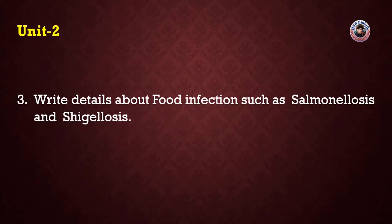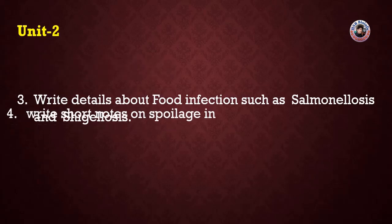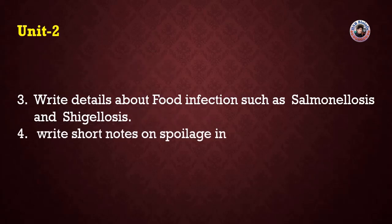Coming to Unit 2 — First important question: Write details about food infection such as salmonellosis and shigellosis. Next question: Write short notes on the spoilage of foods.